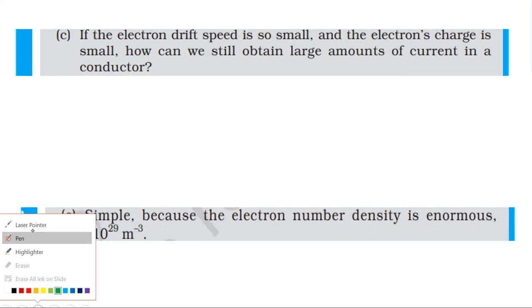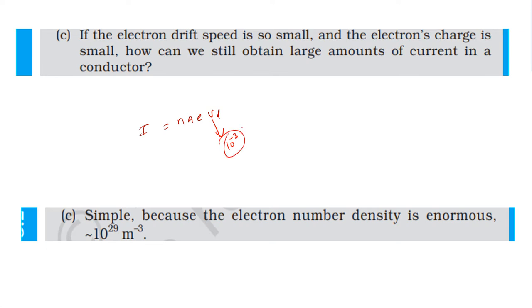Next: if the free electron drift is really so small and the electron charge is small, how can we still obtain large currents? The drift velocity is in the order of 10 power minus 3 meters per second, and the charge of electron is 1.6 into 10 power minus 19 coulombs. But the free electron density has a very large value, in the order of 10 power 29.